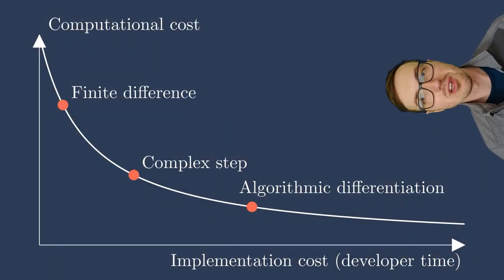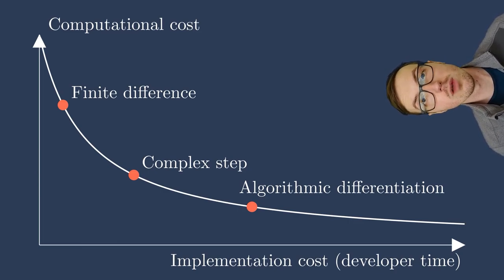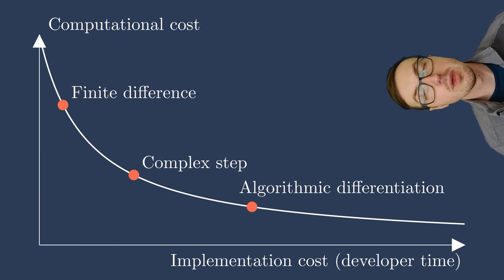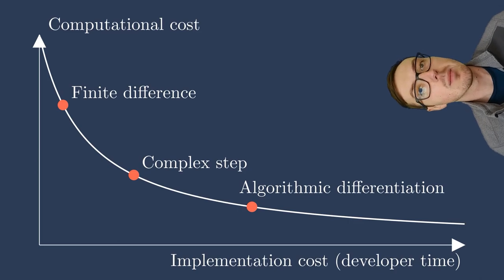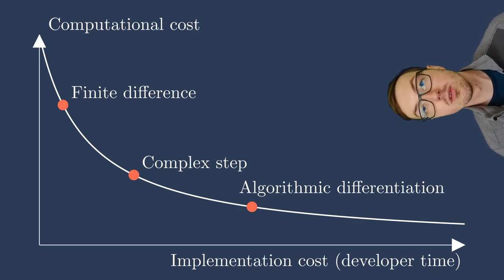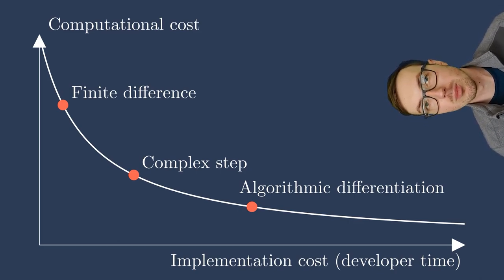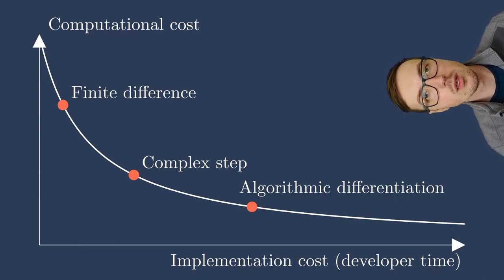So, back to algorithmic differentiation. It has a lower computational cost than finite difference or complex step because you have code that's actually producing the derivatives. Now, this is very problem-dependent and very code-dependent because the code that's actually computing the derivatives might not be that efficient, or it might be very efficient. Again, it's automatically generated code from computers. They're not necessarily focused on the most efficient way to get an answer.